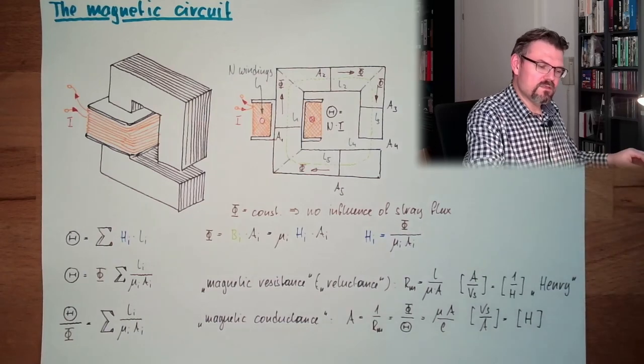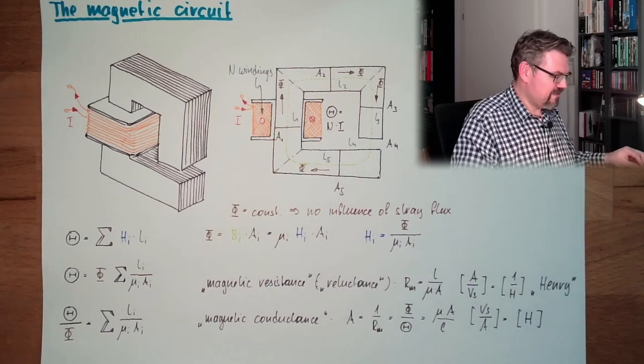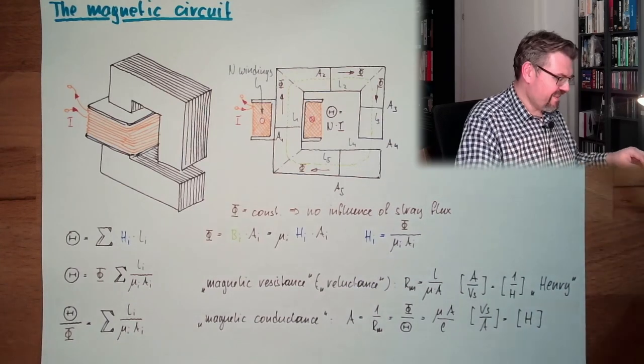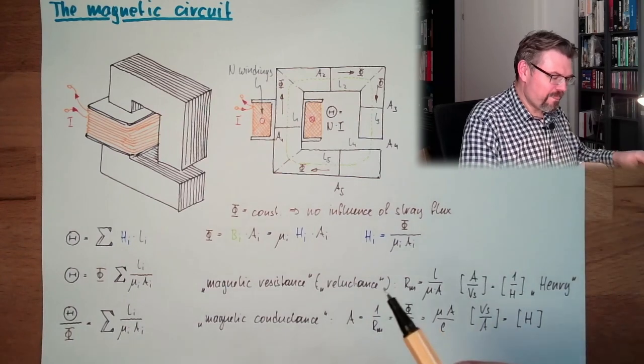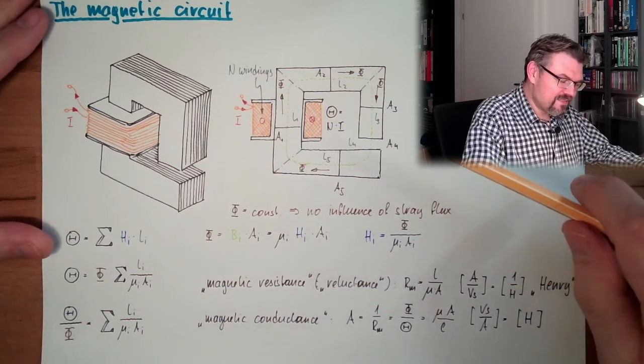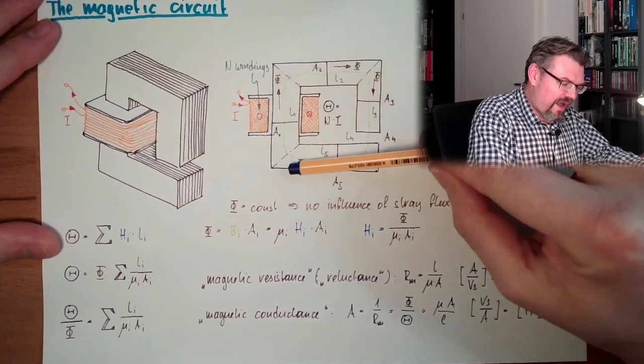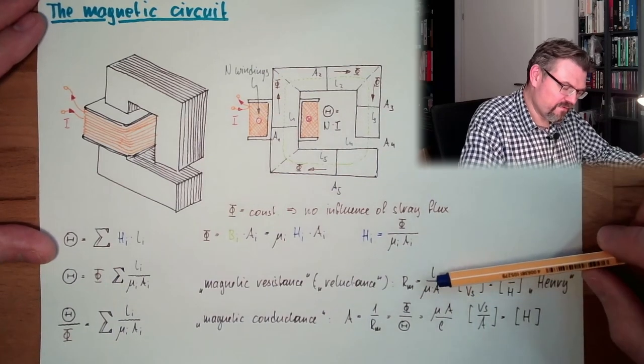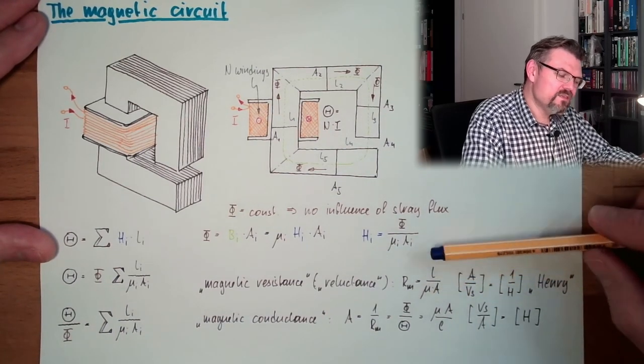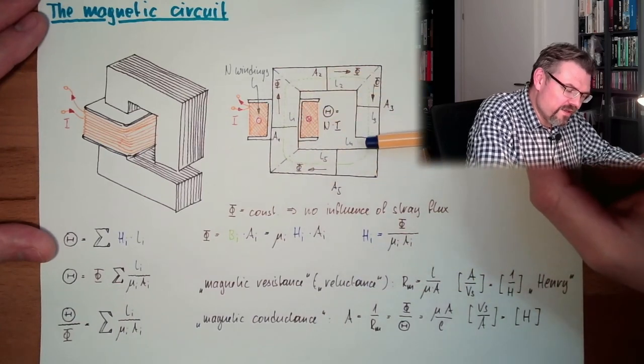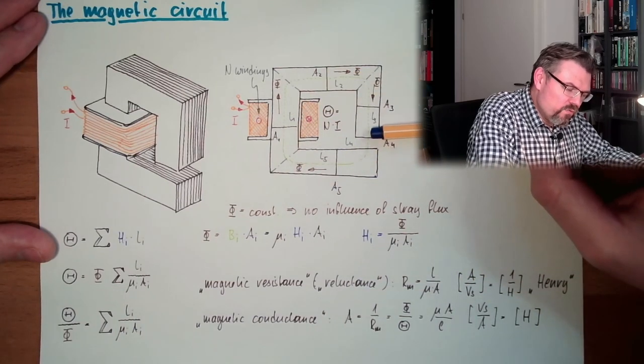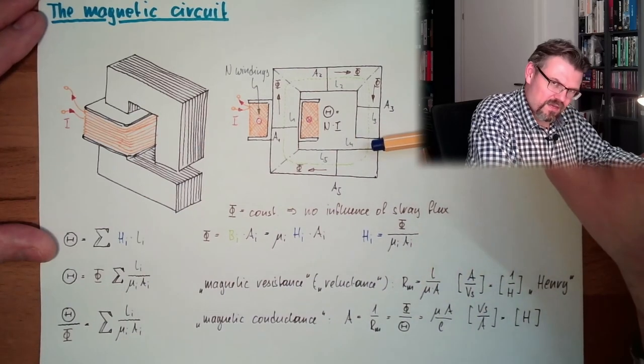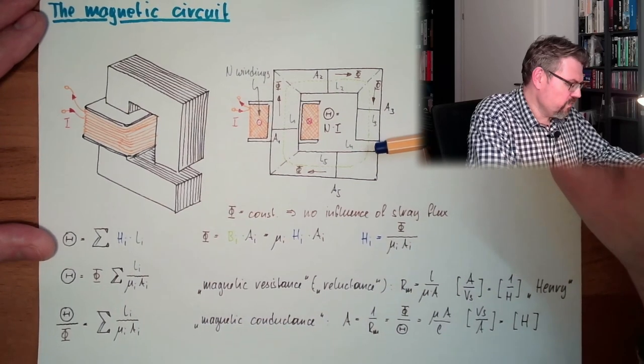Of course, it's the way that we have the situation that this mu here inside the iron is very, very high usually. So the magnetic resistance, the reluctance is very low here in those areas. Here in the gap, we do have quite small mu. So Rm will get very big here.